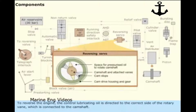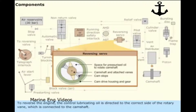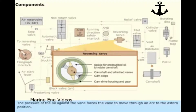To reverse the engine, the controlled lubricating oil is directed to the correct side of the rotary vane, which is connected to the camshaft. The pressure of the oil against the vane forces the vane to move through an arc to the astern position.